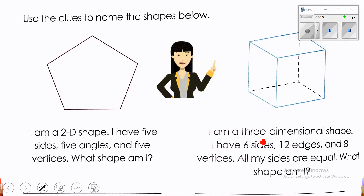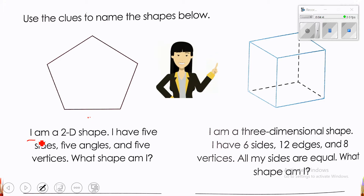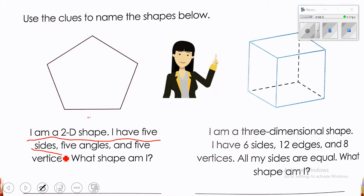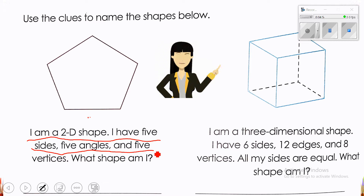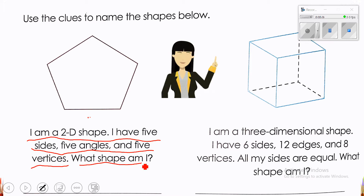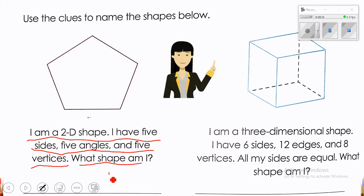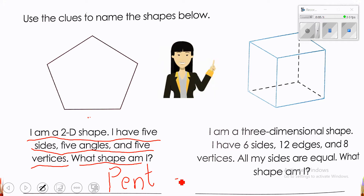This is the first problem solving on page 498. Let's read together. We have to find what shape is described by this riddle: I am a 2D shape. I have 5 sides, 5 angles, and 5 vertices. What shape am I? Remember, all the properties are 5. Excellent — it's a pentagon. Let's write pentagon together.